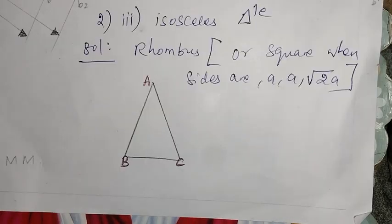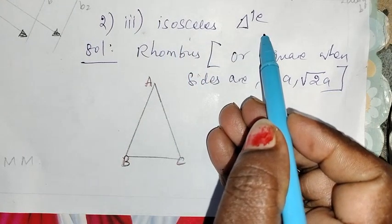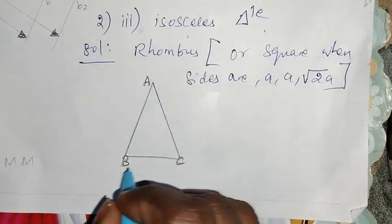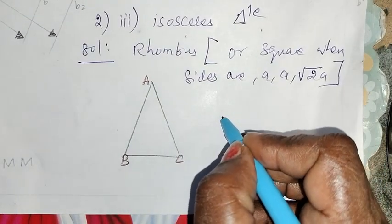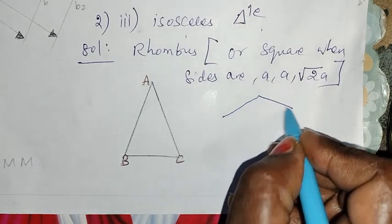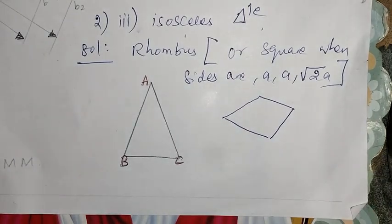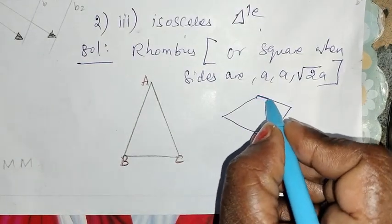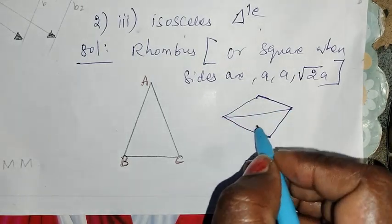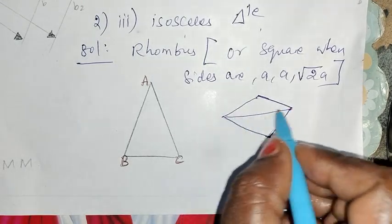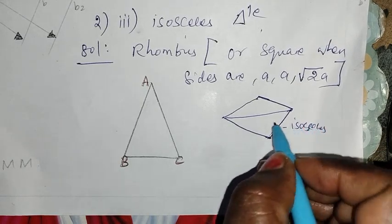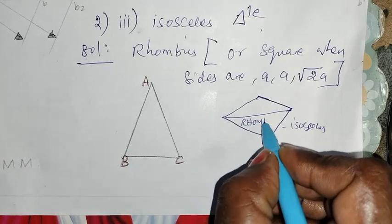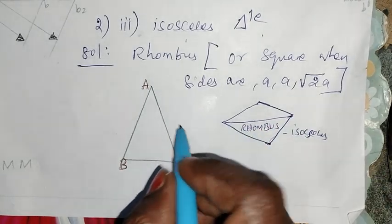Third subdivision, second one: Rhombus — isosceles triangle. Two sides are equal. When two isosceles triangles are joined, the result is a rhombus. The answer is rhombus.